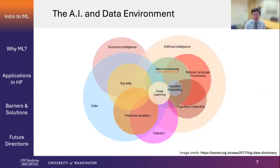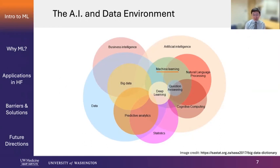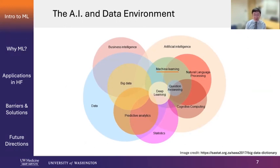The term machine learning is often used interchangeably with artificial intelligence and big data. Machine learning is a sub-field of artificial intelligence, and deep learning is another subset of machine learning. Machine learning often uses big data, and most machine learning algorithms are actually based on statistics and math.